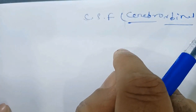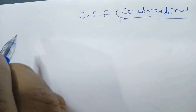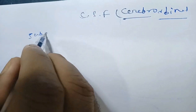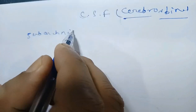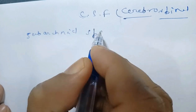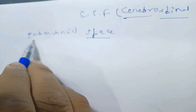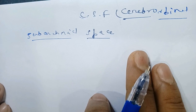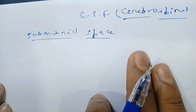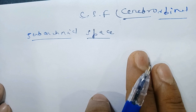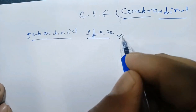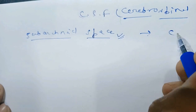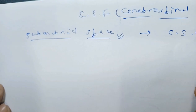The CSF is present in the subarachnoid space, which is present in both the brain and the spinal cord. We know the meninges: the dura mater, the arachnoid mater, and the pia mater. In between the arachnoid and the pia mater there is the subarachnoid space, and in this subarachnoid space the CSF is present.